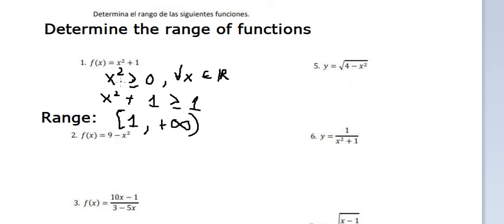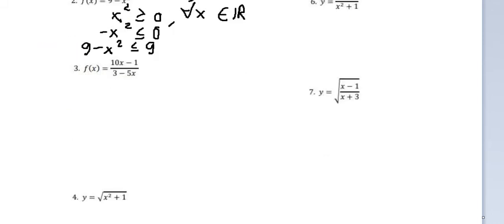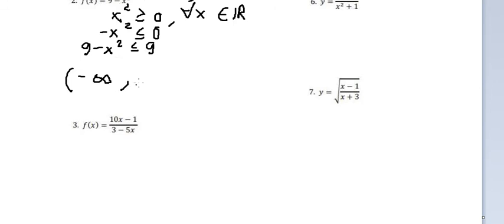The next one, we do the same technique. Because we have a negative sign here, it will change the inequality to smaller than or equal to zero. Then adding nine, the range of this situation should be from negative infinity to number nine.